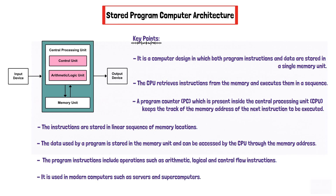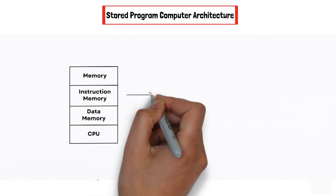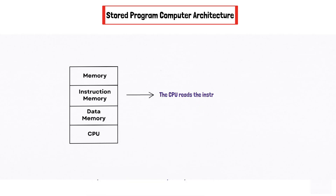Now let's see the working of the stored program computer architecture. The memory unit is divided into two parts: instruction memory unit and data memory unit. The central processing unit has its own memory for processing. The CPU reads the instruction from the instruction memory unit, and the data used by a particular program is stored and retrieved from the data memory unit.